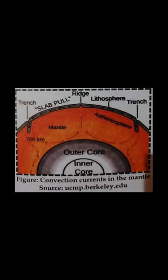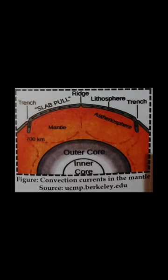Paleomagnetism refers to the study of ancient geomagnetism that was recorded in the rocks formed during that period. Several rocks such as basalt contain magnetic minerals, and these magnetic minerals align themselves in the direction of Earth's magnetic field present at the time of rock formation and solidification. These rocks acquire geomagnetic properties associated with their formation period and thus act as a natural record of Earth's geomagnetic properties. Paleomagnetic studies have proved that the orientation of Earth's magnetic field has frequently altered over time and have provided strong evidence in support of seafloor spreading and plate tectonics.